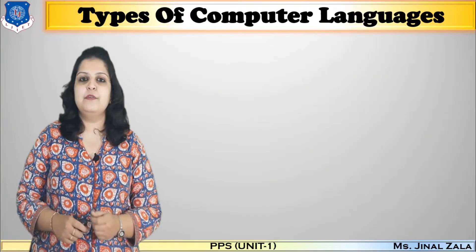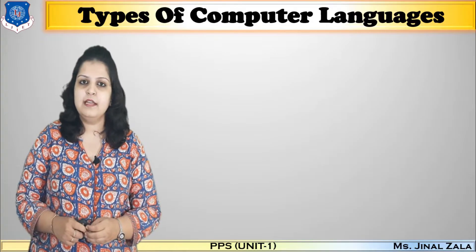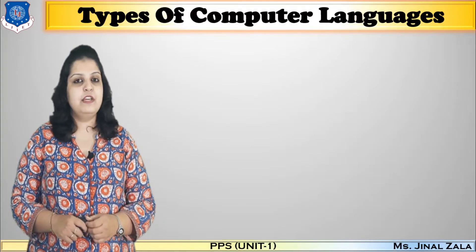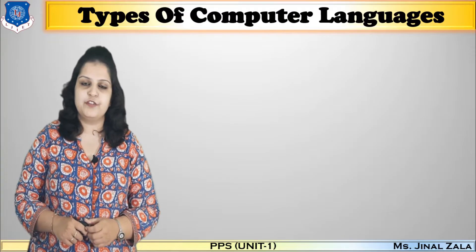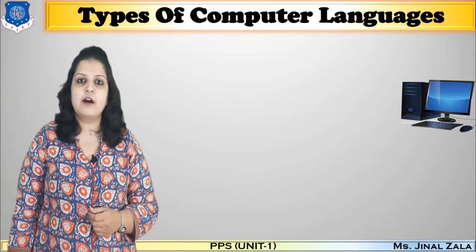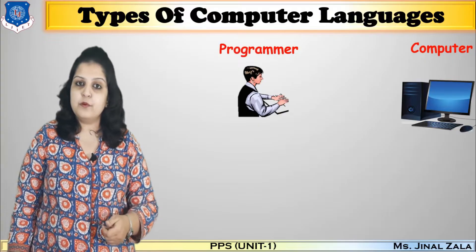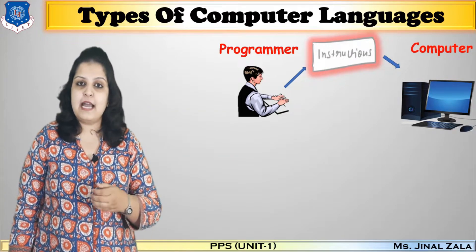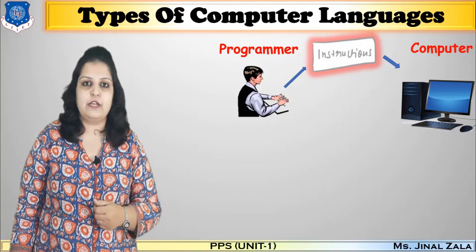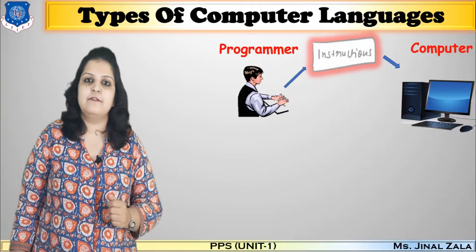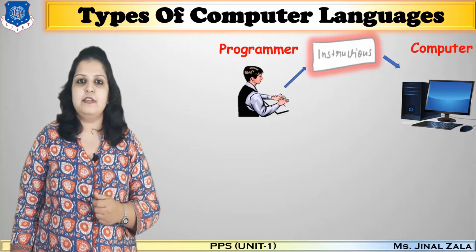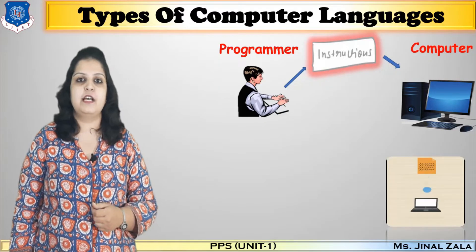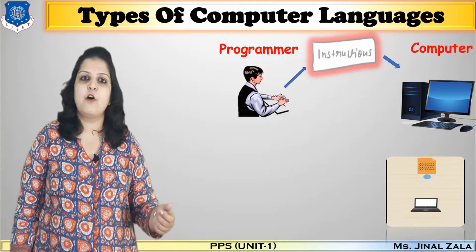In day-to-day life, we are using many communication languages for communicating with other persons, like Hindi, English, Gujarati, and many more. But today we have to communicate with our computer, or we can say machine. Computer can't communicate with us automatically, so the programmer needs to give instructions to the computer. This set of instructions is called software, or we can say a program, as we discussed in our previous videos. This set of instructions is built using different programming languages, which are mainly used to control the behavior of our computer system.